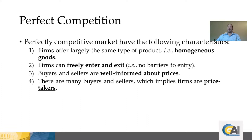The third condition is that buyers and sellers are well informed about prices. This implies that if there are two firms selling the product at different prices, the buyer will immediately go to the one offering the product at a lower price — because, as noted, the assumption of homogenous goods means the buyer has no preference between products and will go to the cheapest option.